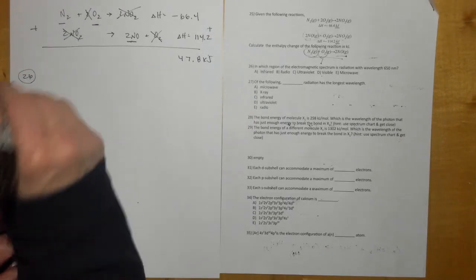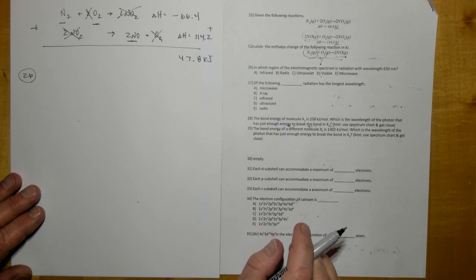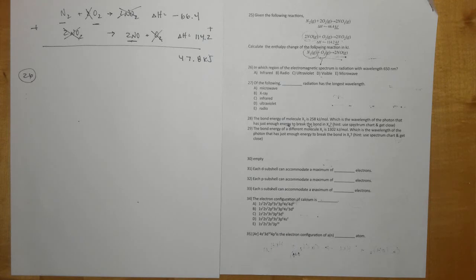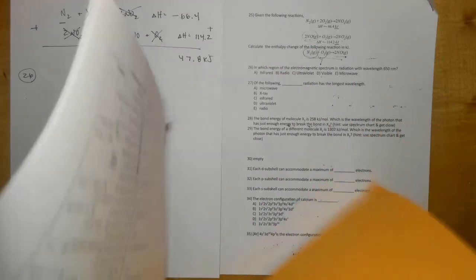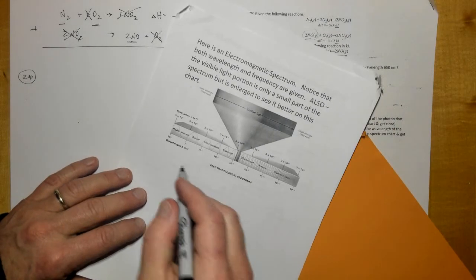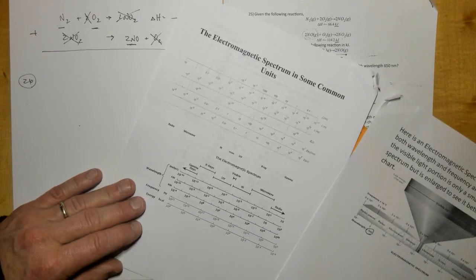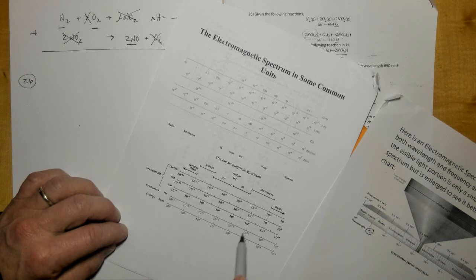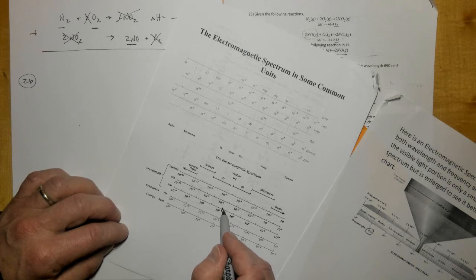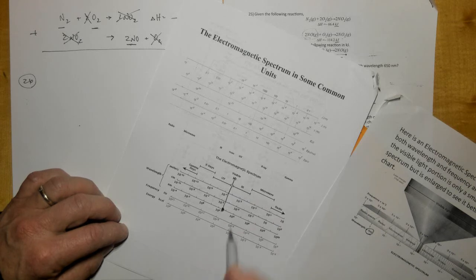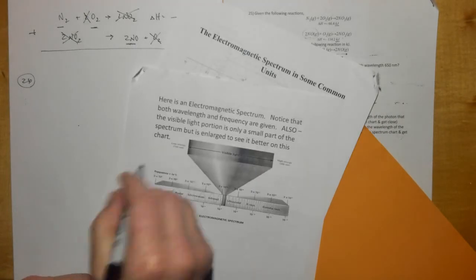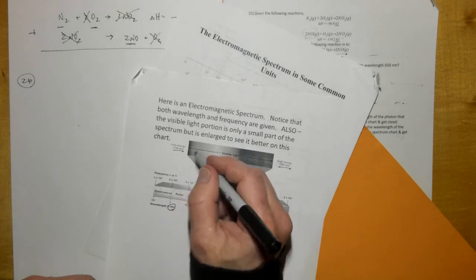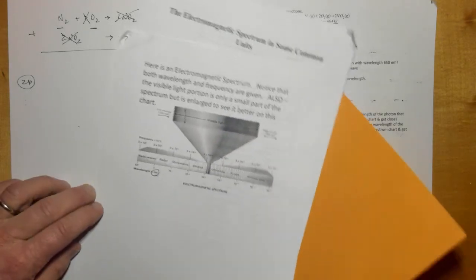Number 26: which region of the EM spectrum is radiation with the wavelength of 650 nanometers? There's no memorizing going on, you got to get your cheat sheets out here that you get on the exam. So you got to find 650 nanometers. Here's the wavelength in nanometers right here. So 650, that'd be 10 to the second is 100, so this would be a thousand. So 650 would be right in this region here, which looks like it's right in the visible spectrum area. Here's 700 nanometers, here's 380 nanometers, so it's right between there. It's visible spectrum.